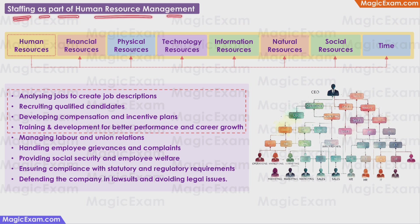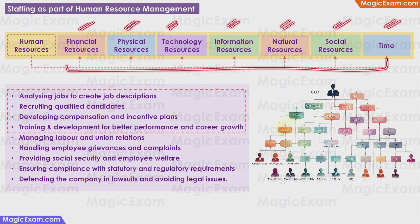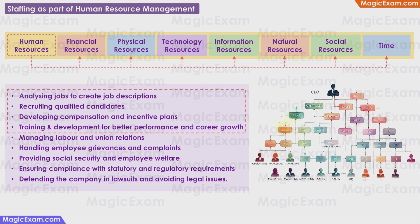Staffing is a part of human resource management. If you look at the various resources used by an organization — financial, physical, technology, information, natural, social resources, and also time — to utilize and manage all of these, you need people, that is human resources. Managing human resources is nothing but human resource management.